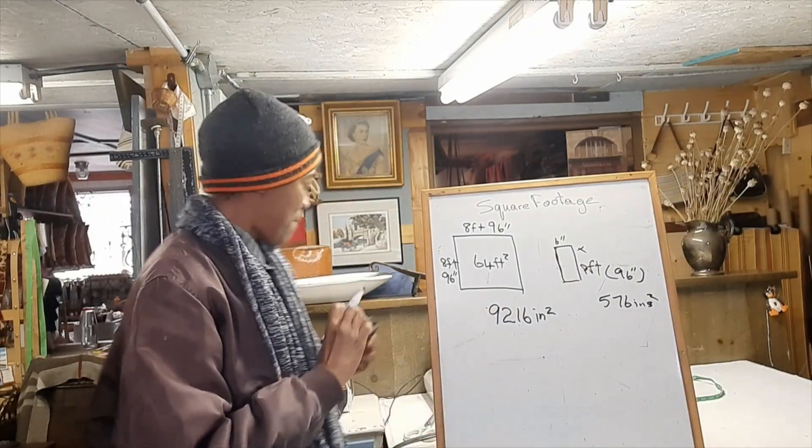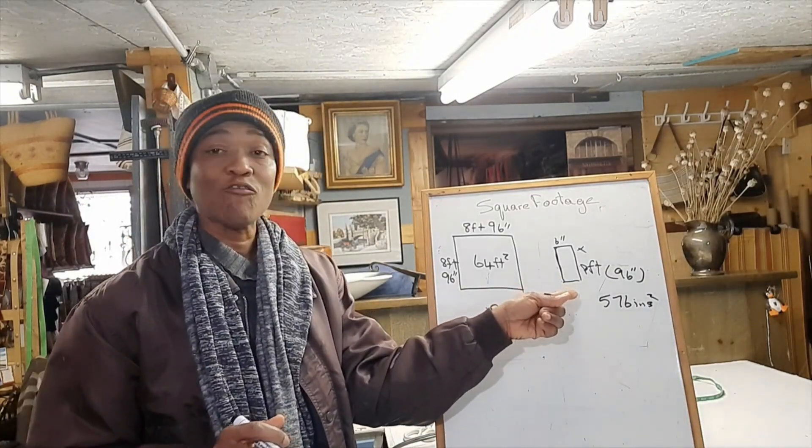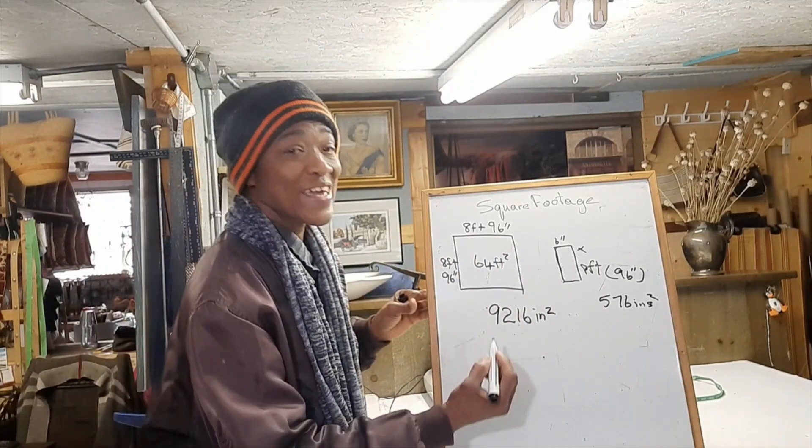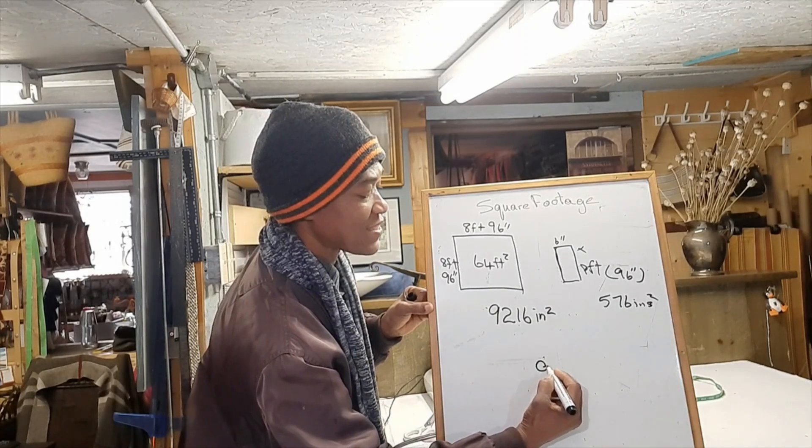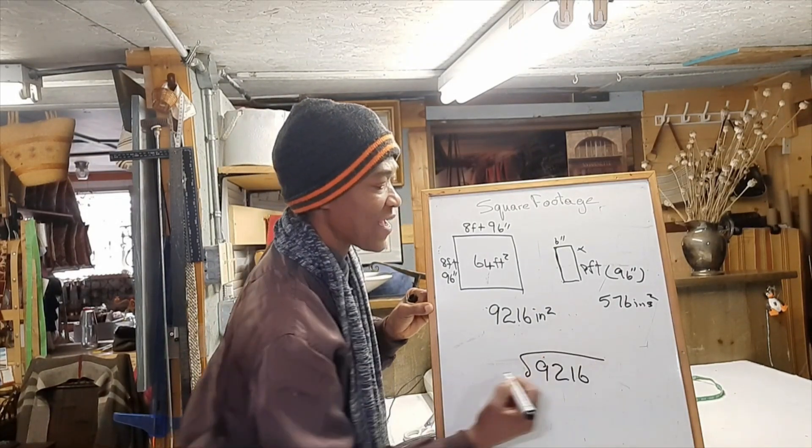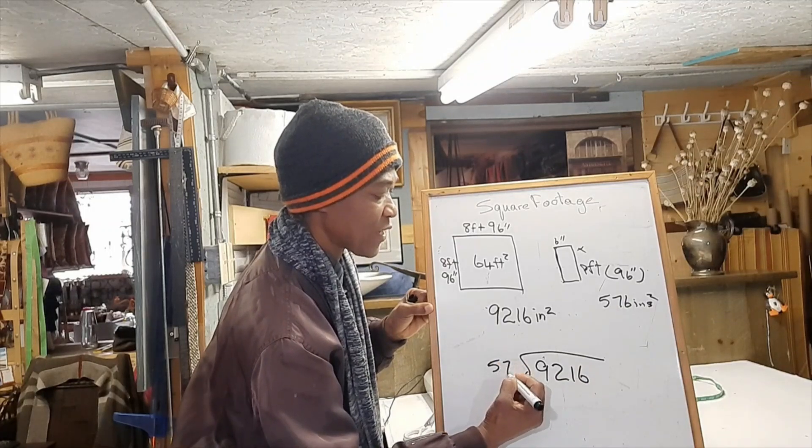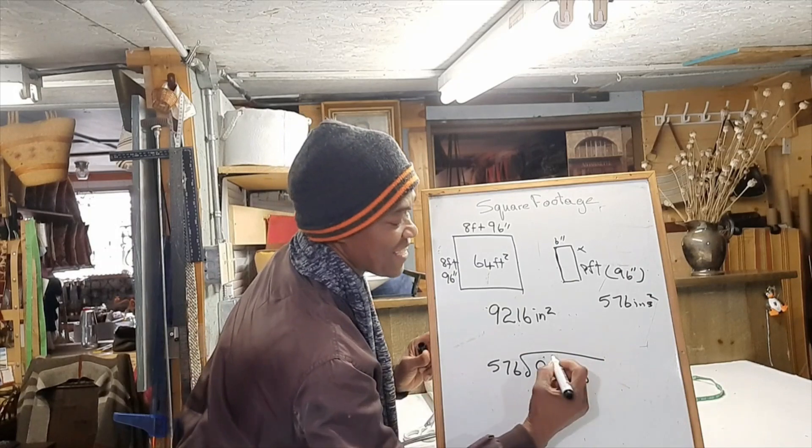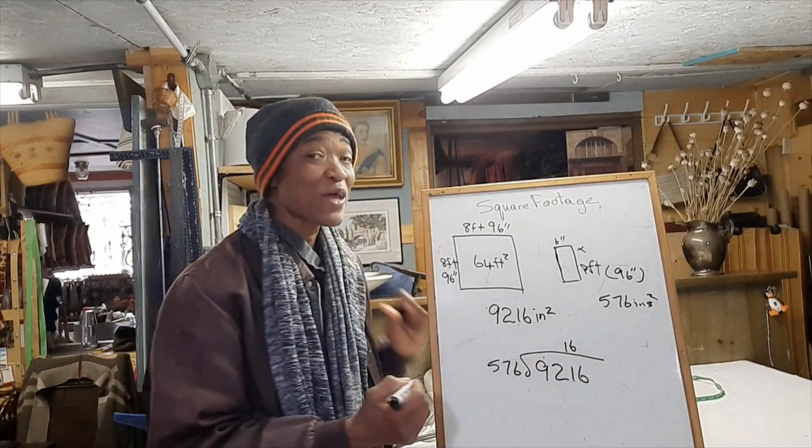Now all we have to do to figure out how many planks of wood we will need, or I will need for my laundry room, is take the 9,216 and divide that by 576. Sixteen. So we will need 16.